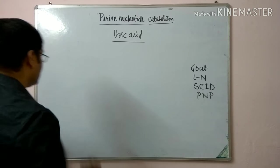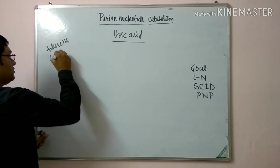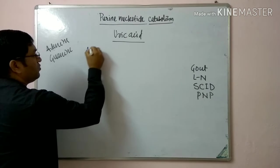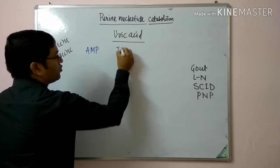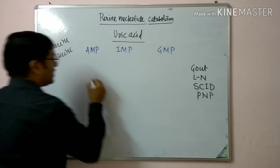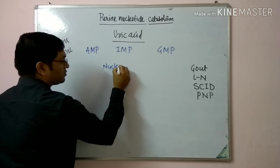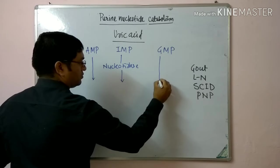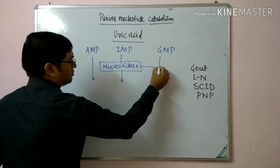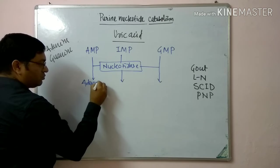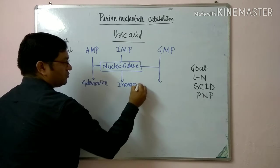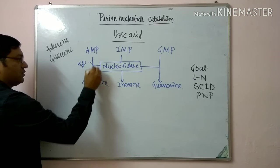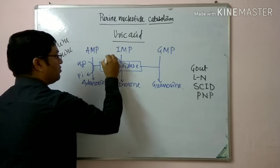Coming to the degradation of purines — adenine and guanine are the purines. In metabolism, the nucleotides adenosine monophosphate (AMP), inosine monophosphate (IMP), and guanosine monophosphate (GMP) are acted upon by nucleotidase and converted into adenosine, inosine, and guanosine, with release of inorganic phosphate.